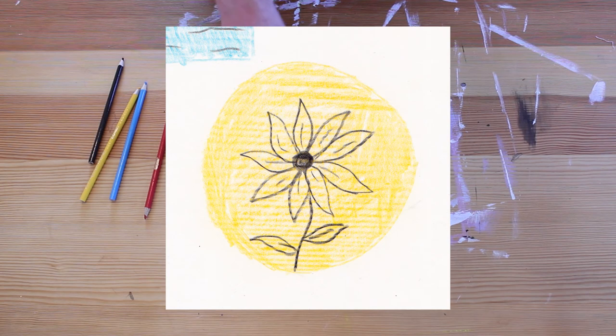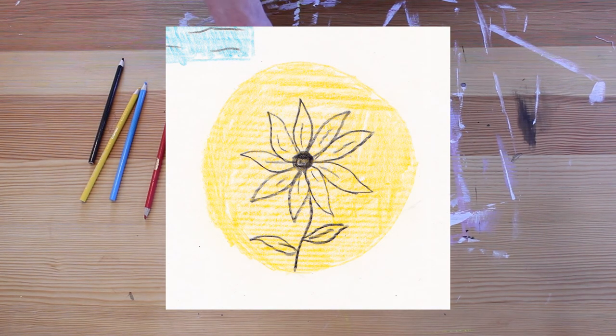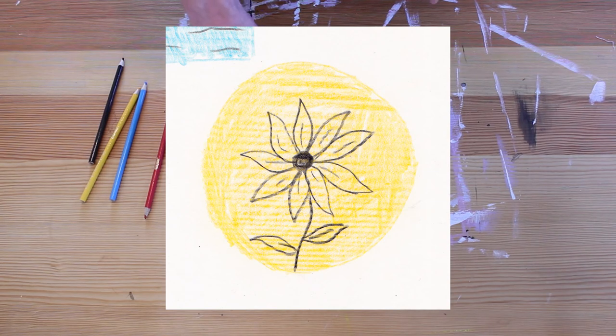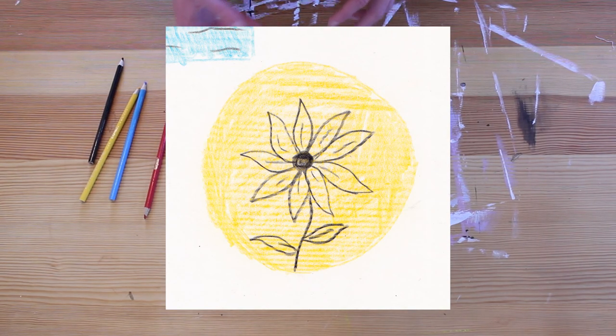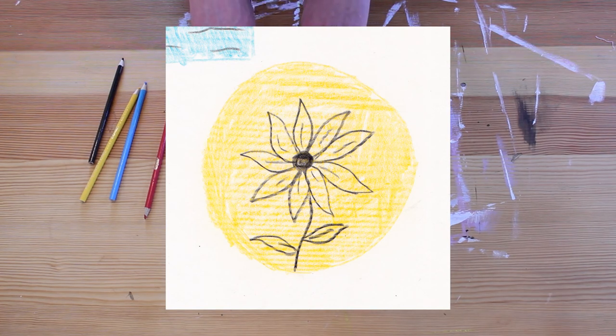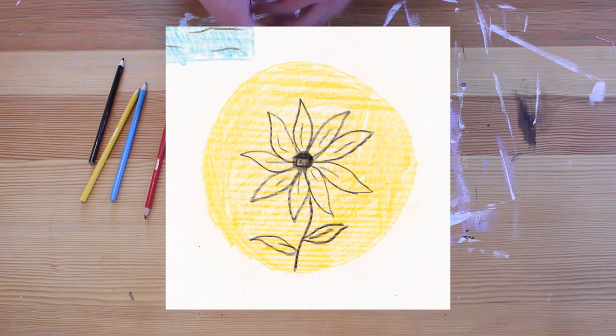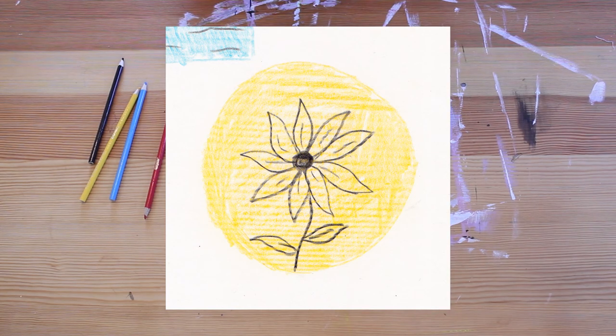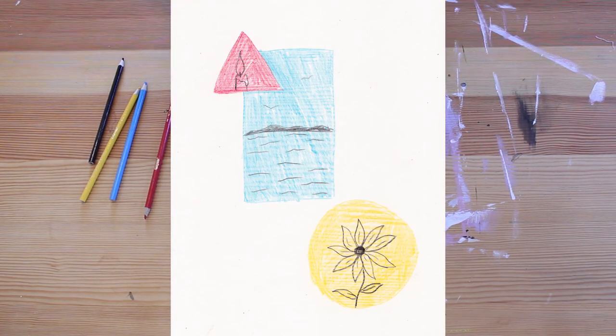And in the yellow one I've drawn a flower with its curved petals, its stem that kind of wiggles back and forth, as well as the leaves here.